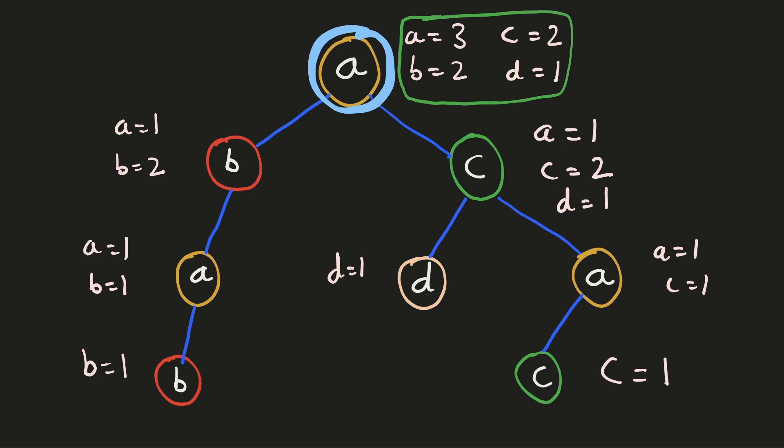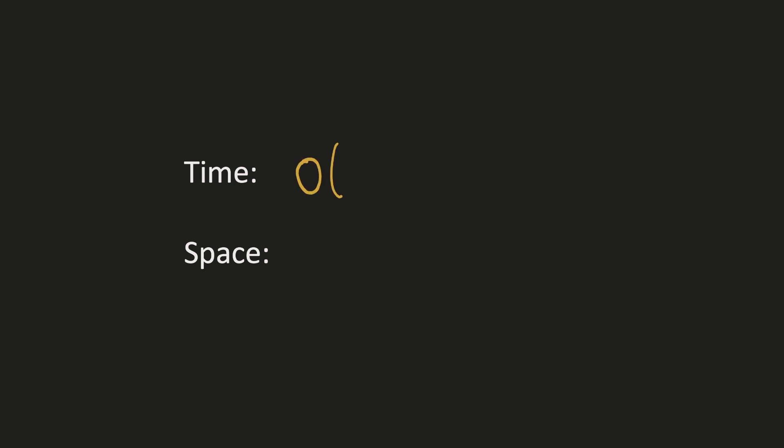The time complexity of this approach is O(26N) because we have to go through each node in the tree and for each of the 26 characters update their counts. The space complexity would also be O(26N) because we have to store the count of each of the 26 characters for every node.